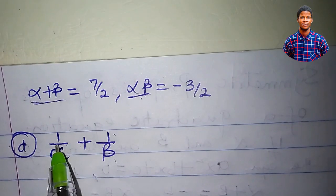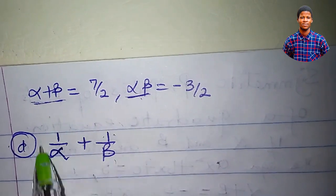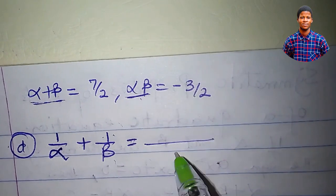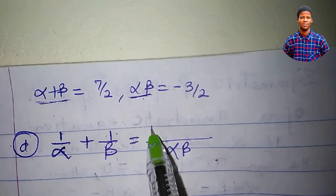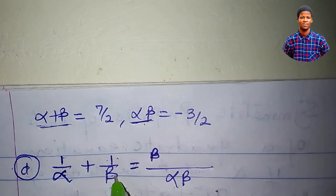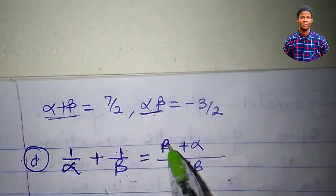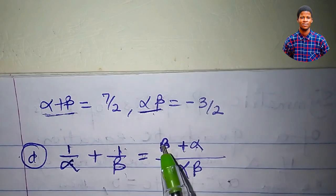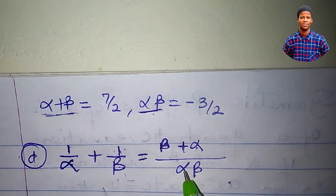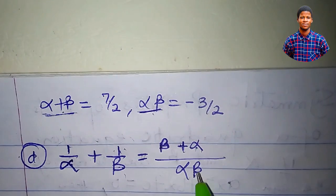Now let's evaluate 1 over alpha plus 1 over beta. By the LCM approach, the LCM is alpha beta. This gives us (beta plus alpha) all over alpha beta, and since addition is commutative, beta plus alpha is the same as alpha plus beta. So 1 over alpha plus 1 over beta simplifies to (alpha plus beta) divided by (alpha beta). We substitute 7 over 2 for alpha plus beta and minus 3 over 2 for alpha beta.